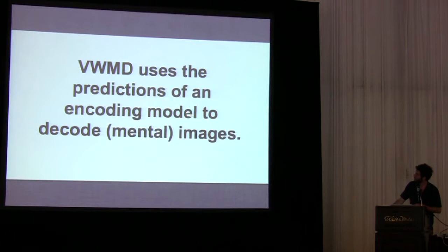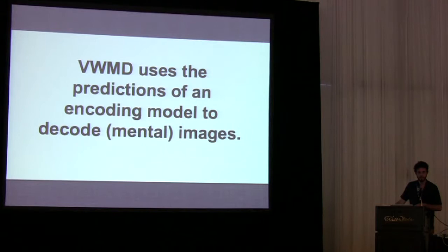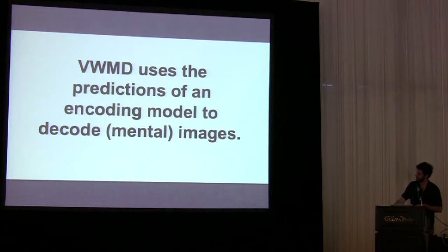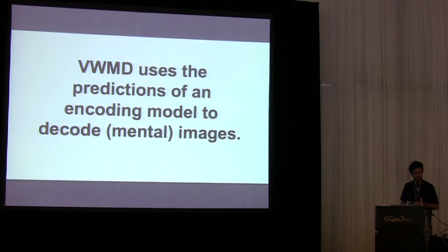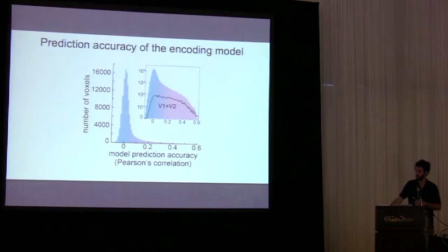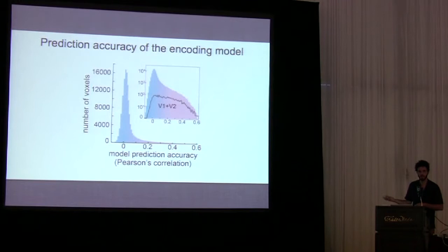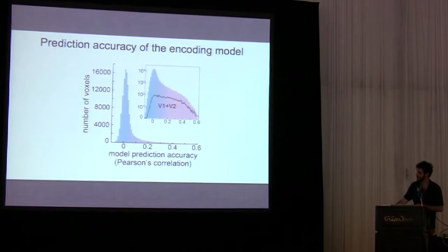What we're going to do with this model is use it to decode mental images. This is an important point because we're going to use the predictions of the encoding model to do our decoding. That means the only way the decoding can work — the only way we can decode a mental image — is if the set of Gabors inside the model is actually doing its job, actually predicting activity evoked during mental imagery. In order to define the populations of voxels that are well-described by this simple model, we look at the prediction accuracy of the model, which is just the correlation between the model's predictions and the measured responses on a set of held-out images.